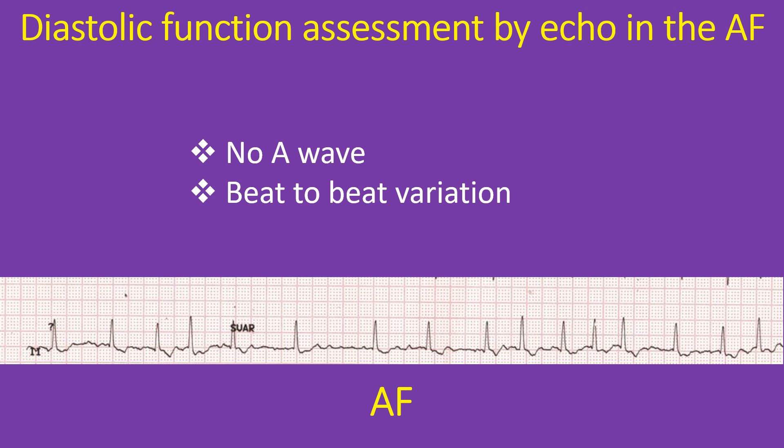Usually, LV diastolic dysfunction assessment by ECHO relies on mitral inflow velocity measurement with demonstration of E by A reversal as evidence of diastolic dysfunction. In atrial fibrillation, the absence of atrial contraction and the A wave makes this assessment impossible. Moreover, the variation in the cardiac cycle also causes beat-to-beat changes in ventricular relaxation.